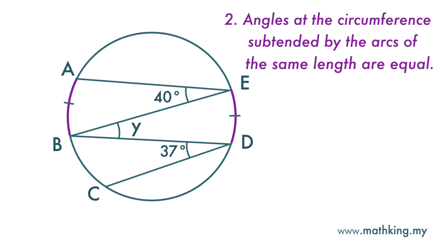The angle subtended by arc AB at the circumference is 40 degrees. So angle y is also 40 degrees.